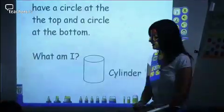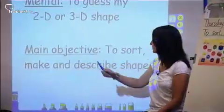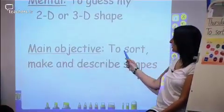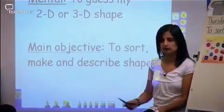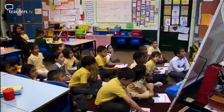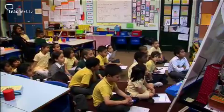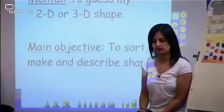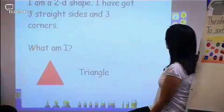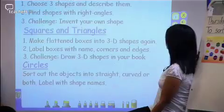Alison fast forwards to the main activity. The teacher explains: 'Our main objective today — some of us are going to be sorting some shapes, some of us are making shapes, and some of us are describing shapes. It's going to be a very busy lesson.' The class splits into five different groups based on ability.